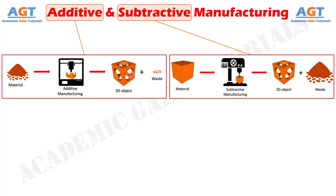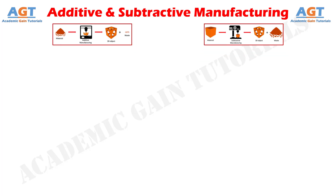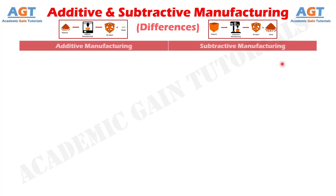Contrary to the additive approach, layer by layer material can also be removed from a solid blank to obtain a product having desired shape, size, and dimension. This approach of removing layers of material from a solid blank is termed as subtractive manufacturing. So let's look into the basic differences between additive and subtractive manufacturing in a tabular form.